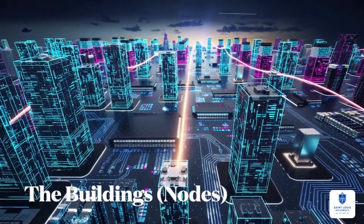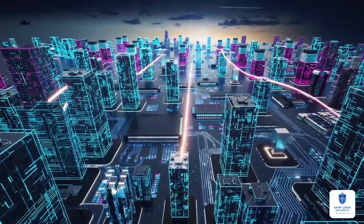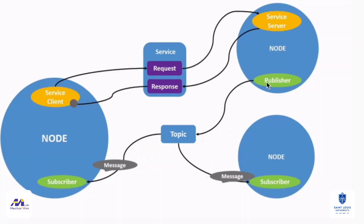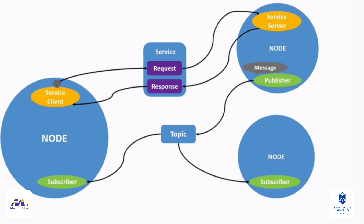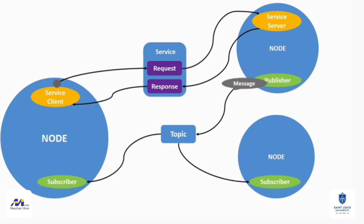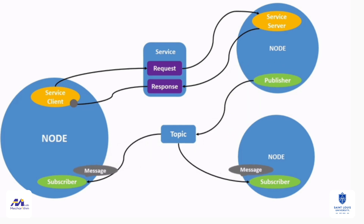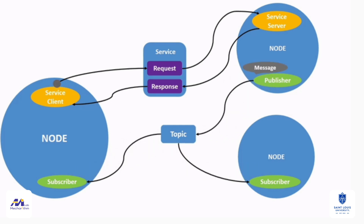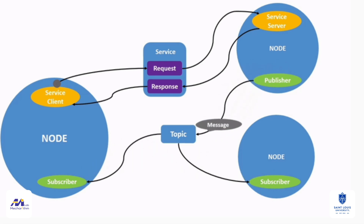In our city, each building represents a node. In ROS 2, a node is a process — a self-contained computational unit. One building may house a camera node, continuously producing images. Another may contain a LIDAR node, mapping the environment. A motor controller node governs movement, while a path planner node computes trajectories. Each node is specialized, forming the distributed architecture of a robotic system.